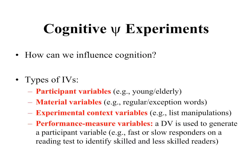There are also performance measure variables, where we use a dependent variable to generate a participant variable. For example, some of you might be fast readers and some might be slow readers. We can measure that and then classify you into groups based upon how you perform in a pre-test for reading speed.